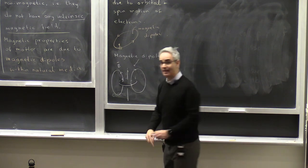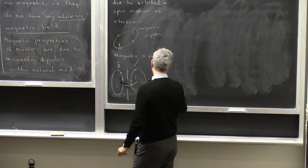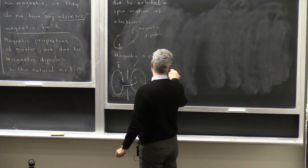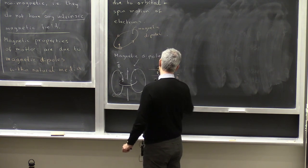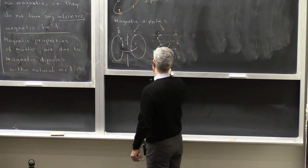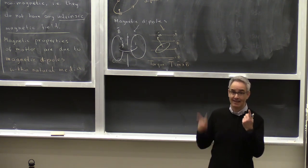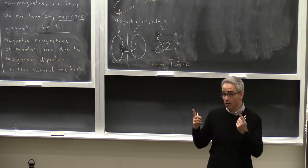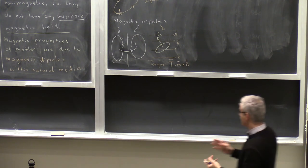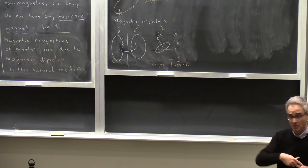There are two things to keep in mind about magnetic dipoles. First, a magnetic dipole has its own magnetic field — flux lines going straight through the center and circulating around. Second, in an external magnetic field B, a magnetic dipole with moment m experiences a torque τ = m × B. That torque is zero when m is parallel or anti-parallel to B, so dipoles tend to align with the external field.